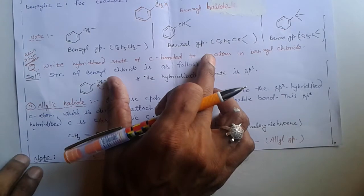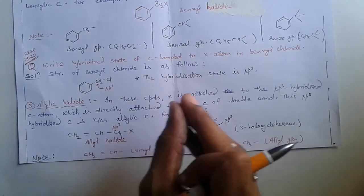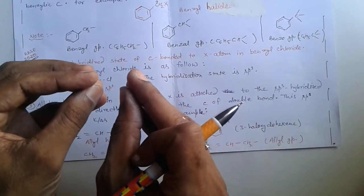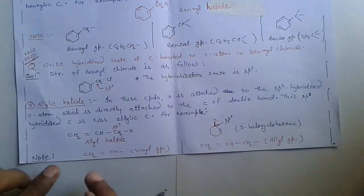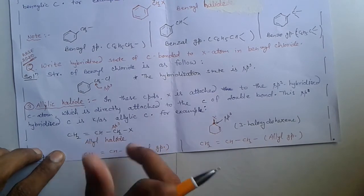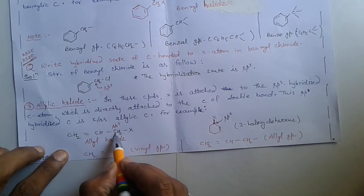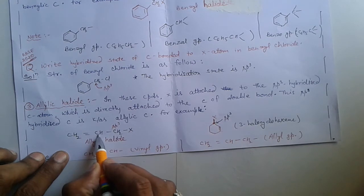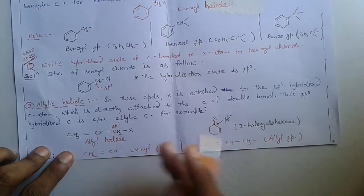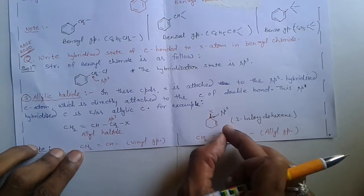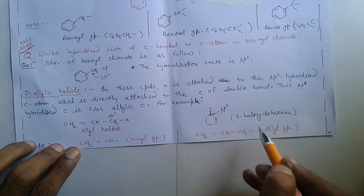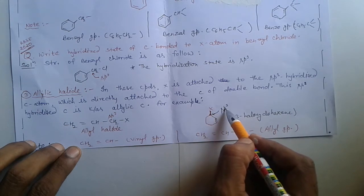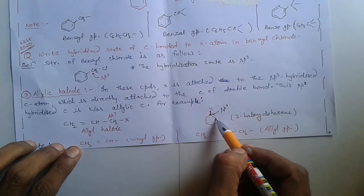Next classification: third, allylic halide. In these compounds, halogen is attached to an sp3 hybridized carbon that is directly attached to a double-bonded carbon in the carbon chain. For example, allyl halide — an aliphatic compound where halogen is on an sp3 carbon adjacent to a double bond. Second example: 3-halocyclohexene, a cyclic compound where halogen is on an sp3 carbon directly attached to a double-bonded carbon.